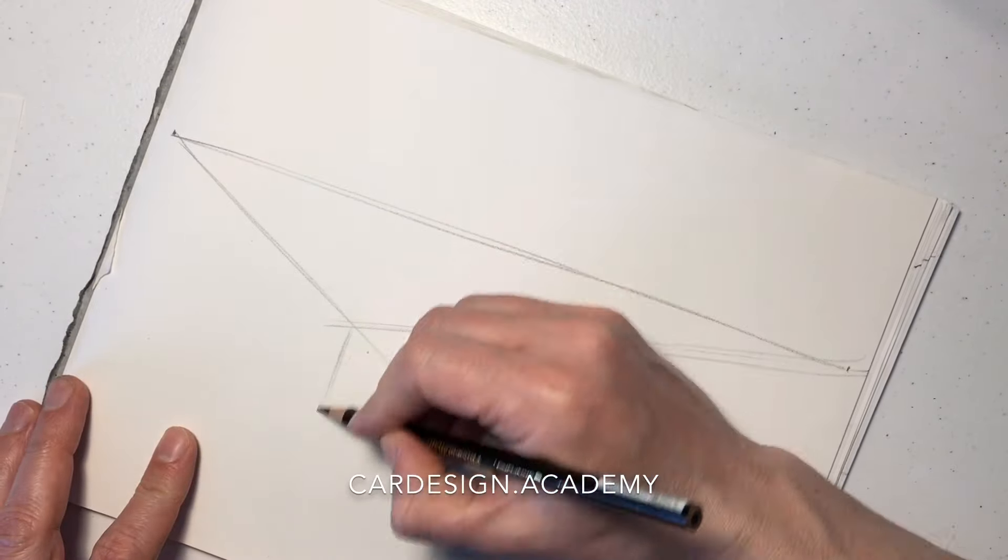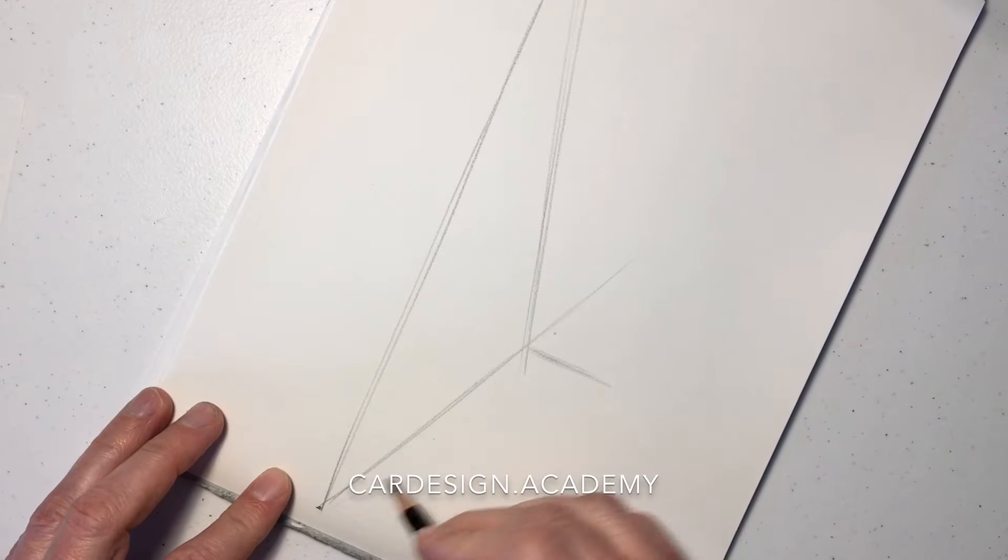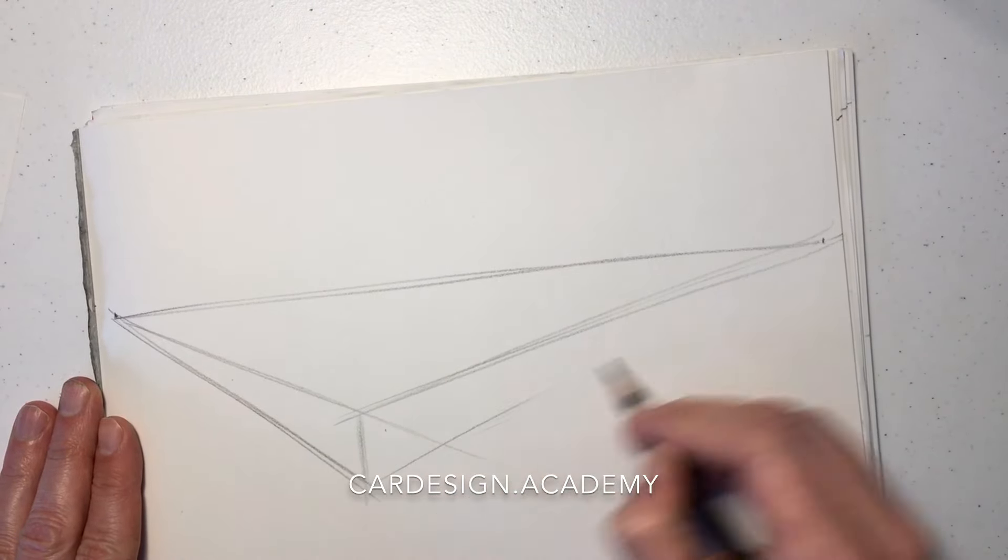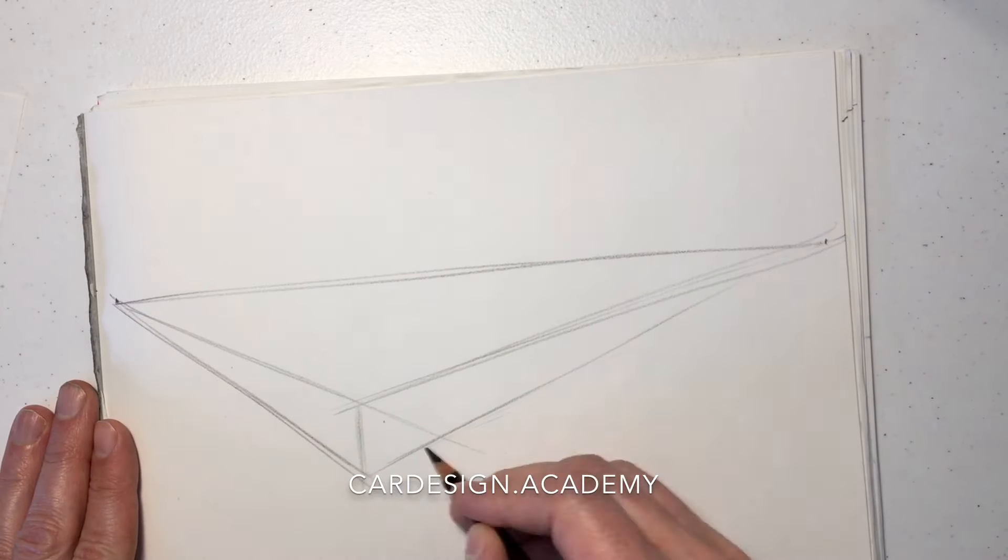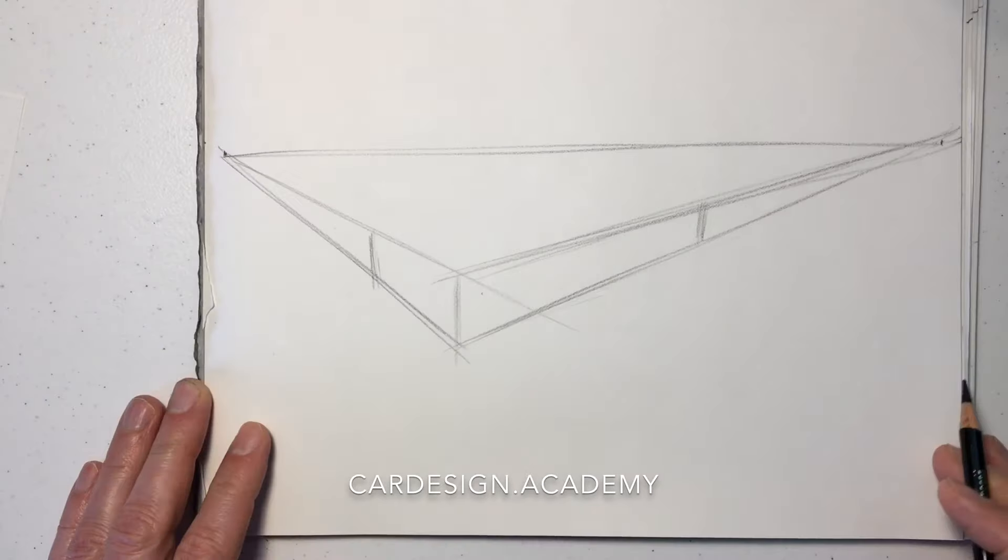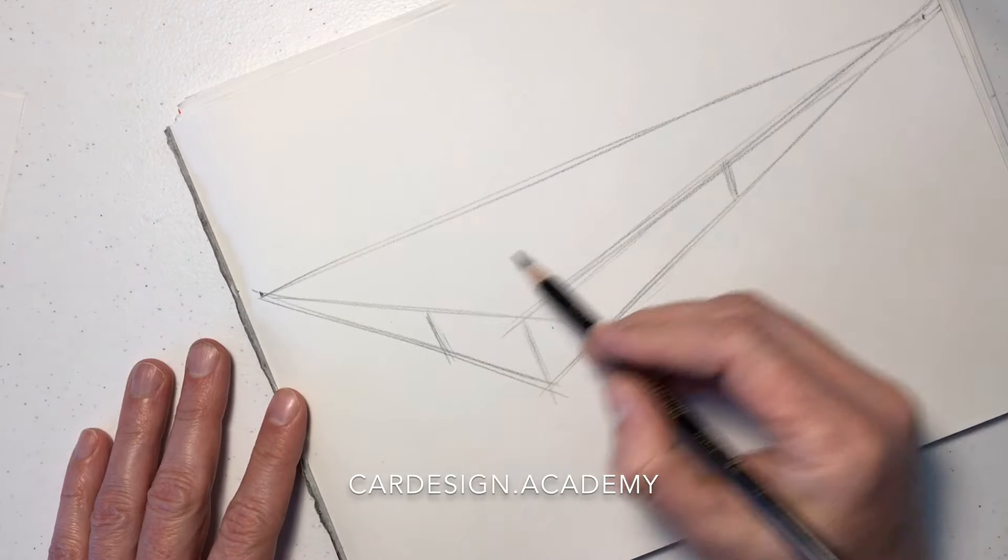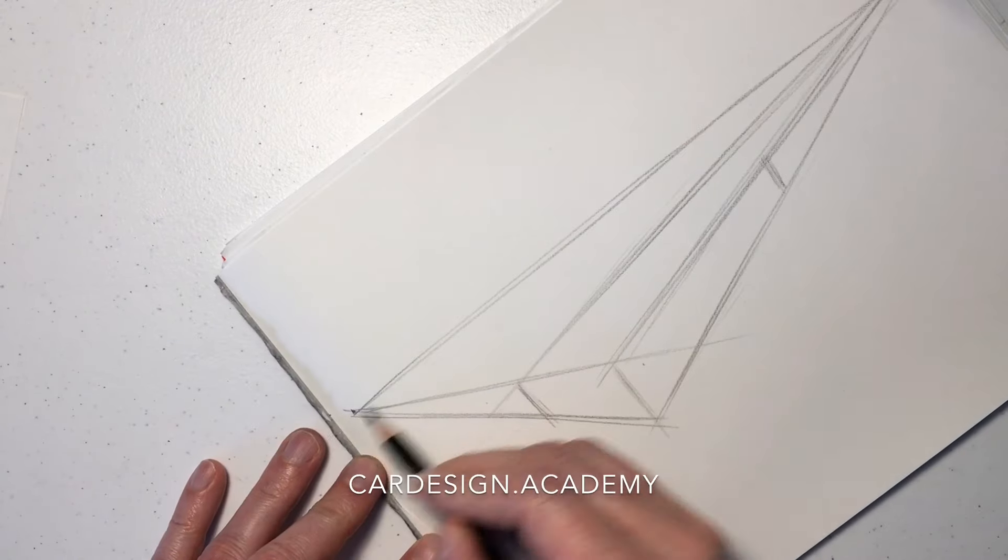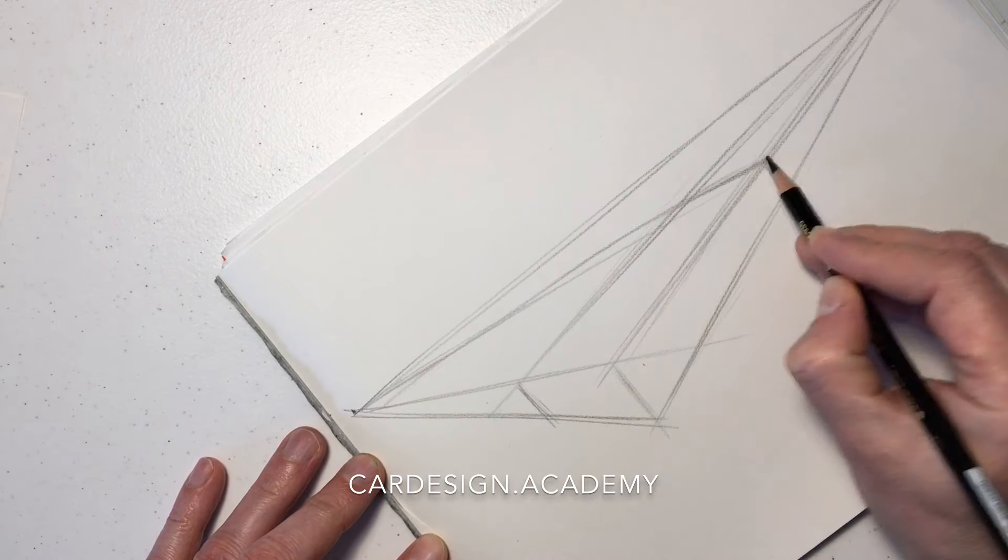Again, drawing our horizon line and vanishing points, we're going to draw a flatter, longer, wider object. This one's going to have a defined length and width and height, something more similar to a vehicle in terms of proportions.